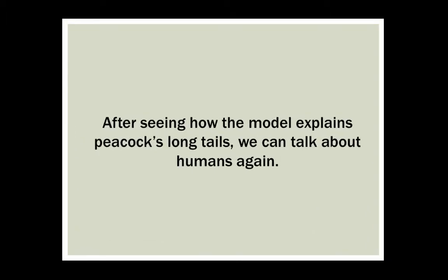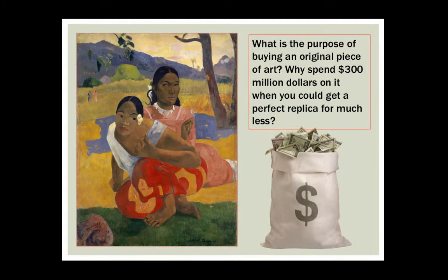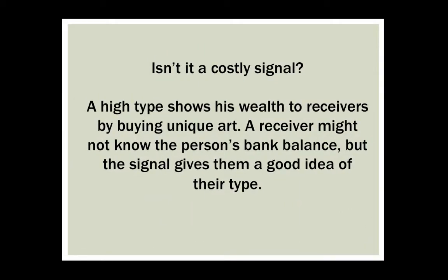After seeing how the model explains peacocks' long tails, we can talk about humans again. What is the purpose of buying an original piece of art? Why spend $300 million on it when you can get a perfect replica for much less? Isn't it a costly signal? A high-type shows its wealth to receivers by buying unique art. A receiver might not know that person's bank balance, but the signal gives them a good idea of their type.